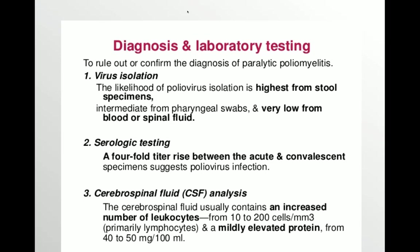CSF analysis is done to find out the number of cells, whether they are increased or decreased. In this case, the cells are markedly increased, and when DLC is done, the cells are mostly lymphocytes. On chemistry of CSF, the proteins are mildly elevated.